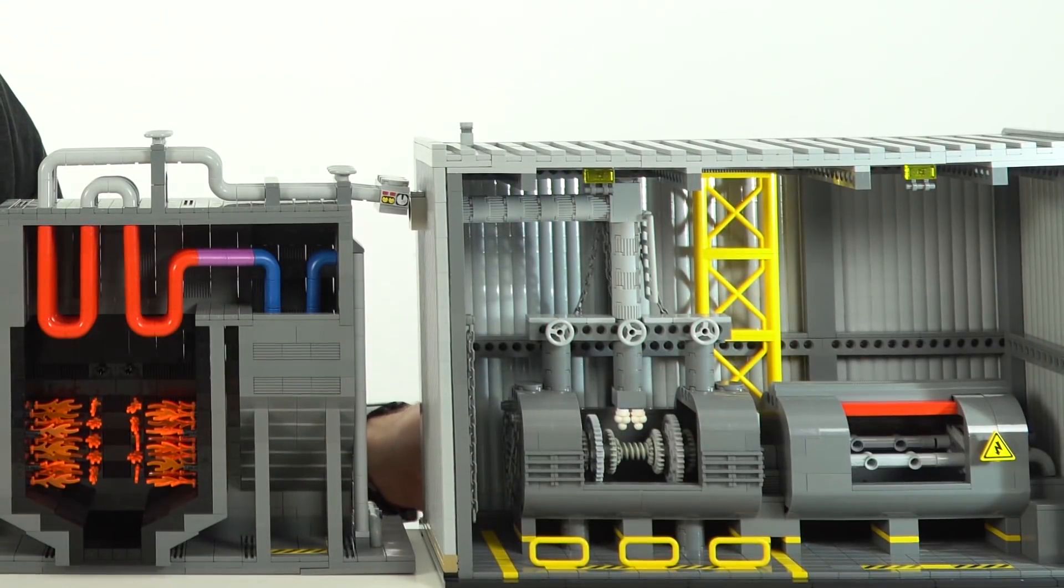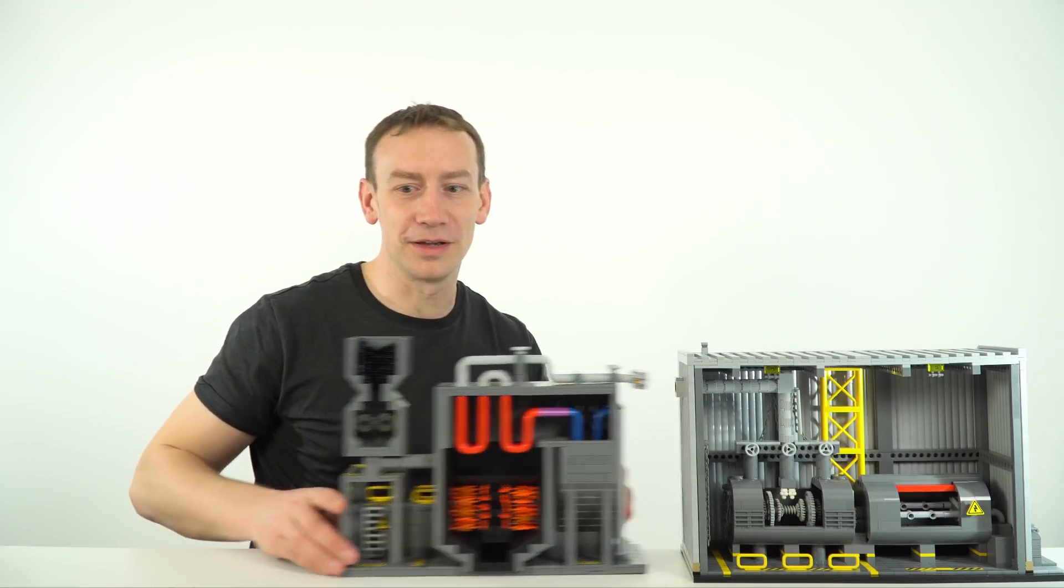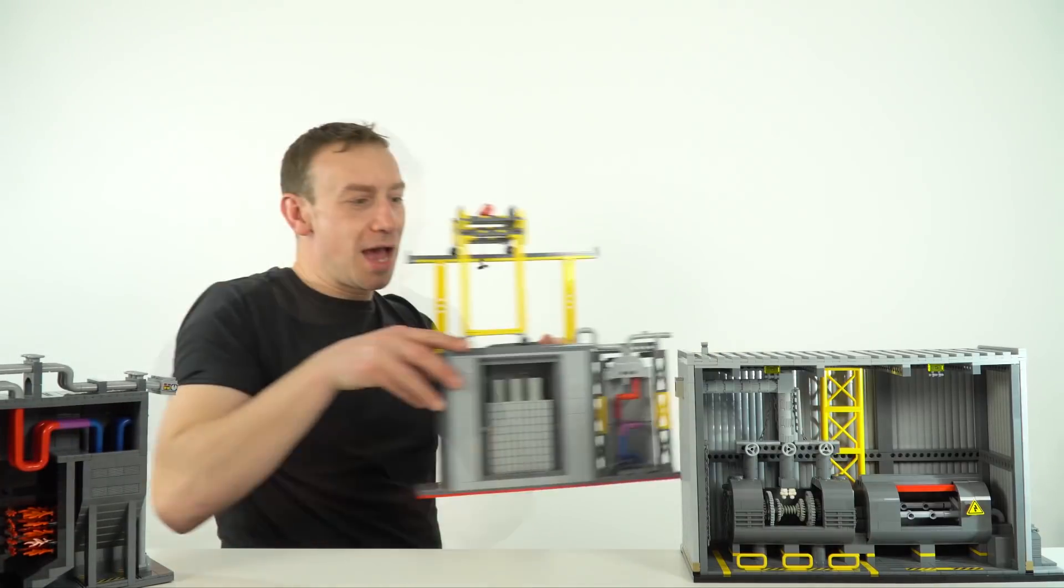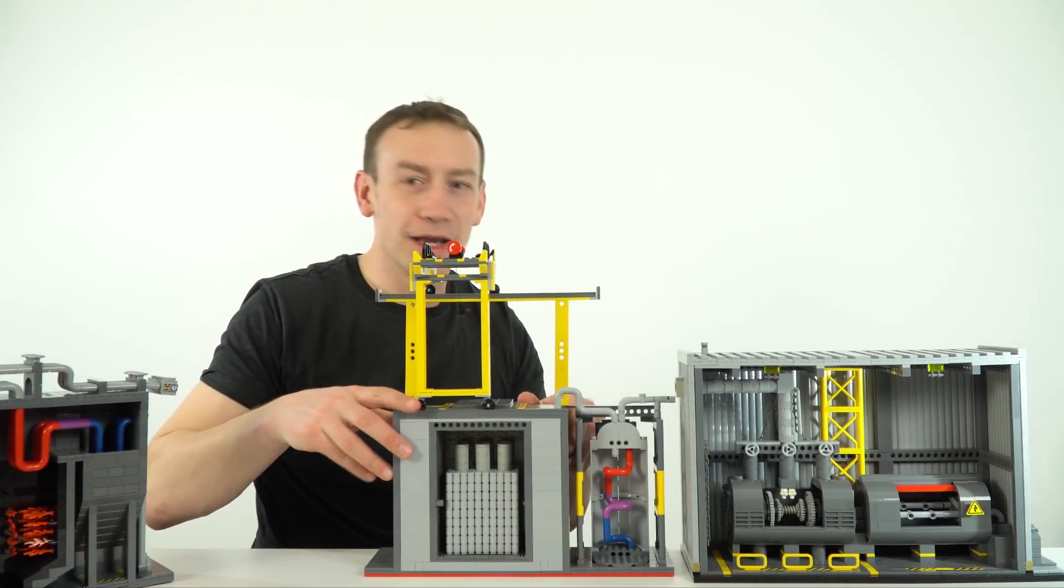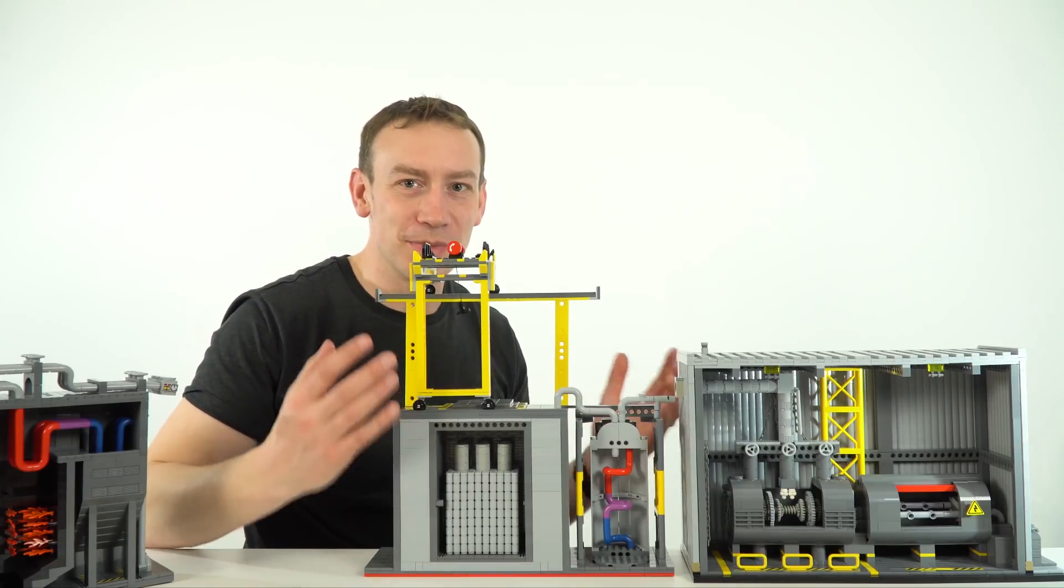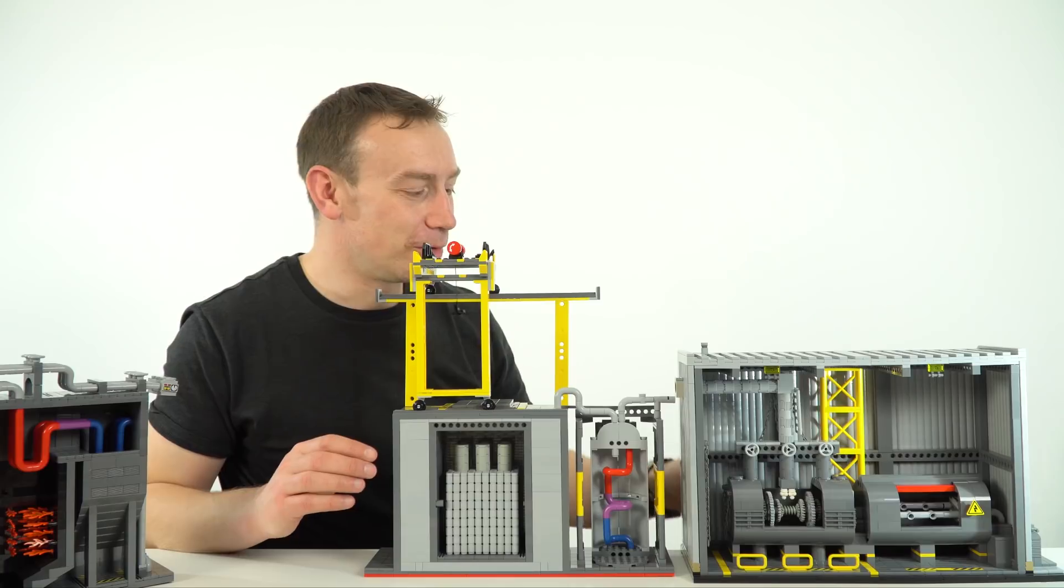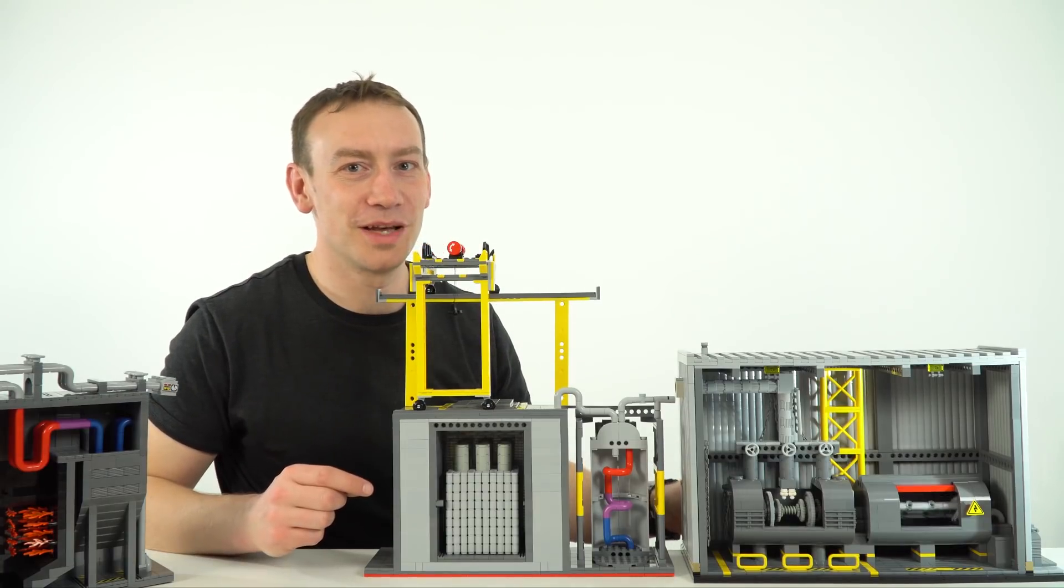Now in a nuclear power station, we just replace this furnace and we replace it with a nuclear reactor. All this is trying to do is get water to be hot so it can turn to steam. Effectively this building stays the same - all we need is steam which turns the steam turbine which then causes a generator to generate electricity.